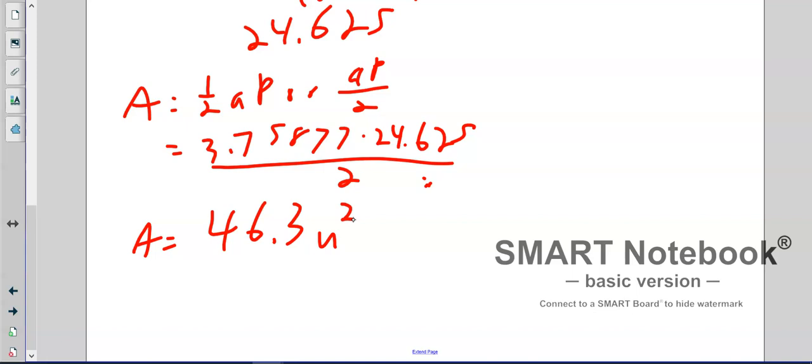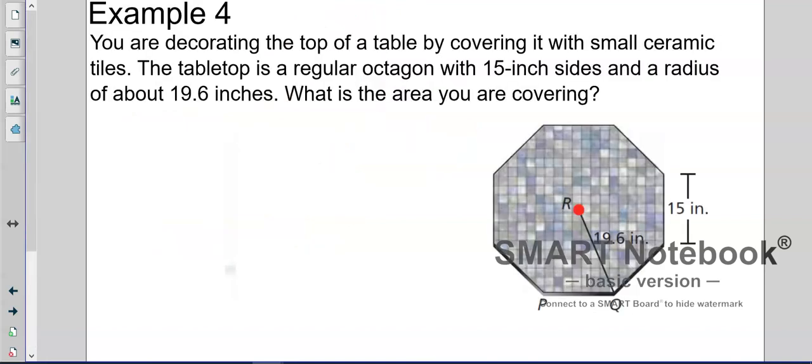So we're going to do another one. Basically this is what we're doing here - it's just going to be the same steps over and over. We've got to do all the work to get to it. Sometimes you'll be given the apothem, sometimes you won't. Some will be shorter than others, but we just keep going.